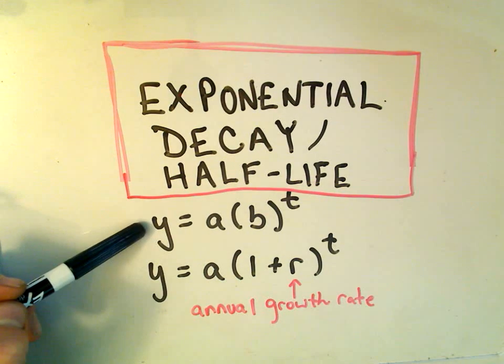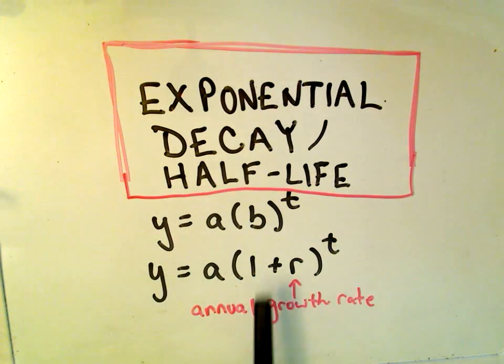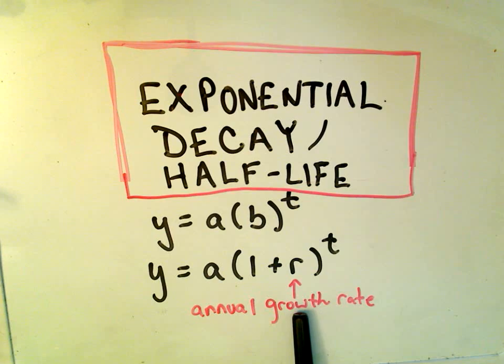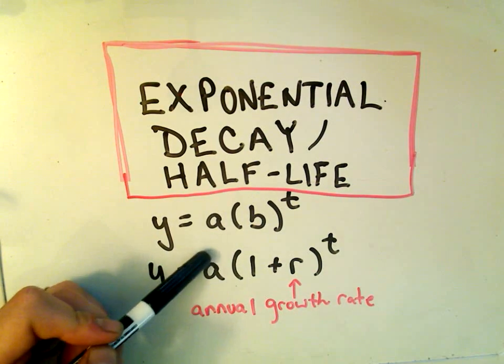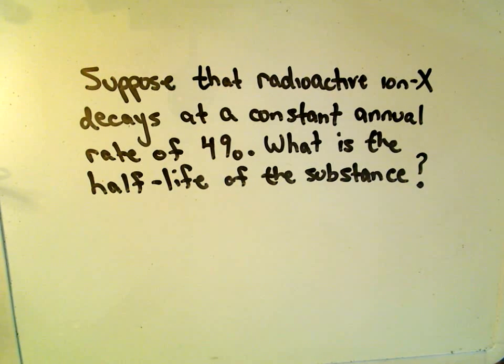Remember the basic form of an exponential equation is a times b to the t. We can equivalently write our base b as 1 plus r, where r represents the annual growth rate. Also, a represents the initial amount. t will be my variable, we'll let it stand for time.